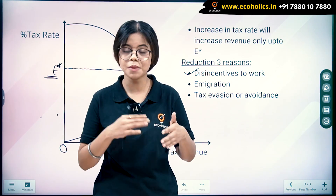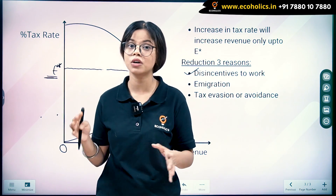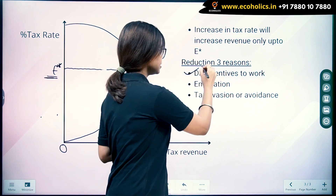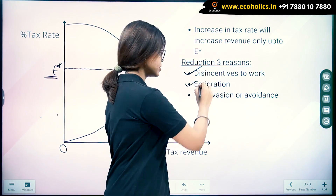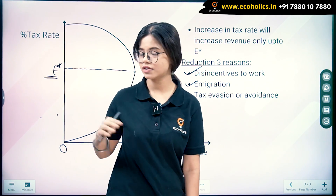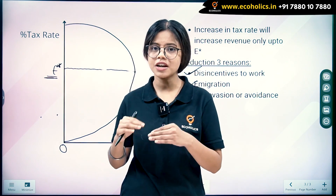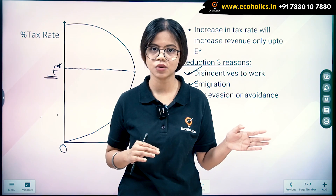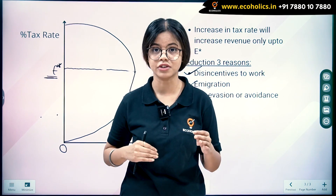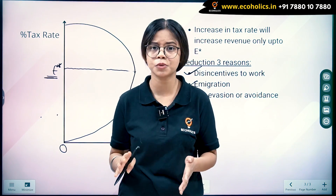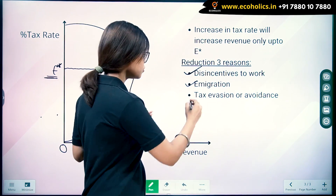People start substituting leisure — they don't want to work because the more they work, the more will be taxed away. So the first reason is it disincentivizes people to work. The second reason is immigration. If in our country the tax rate is high, high-skilled people will try to migrate to other countries where the tax rate is lower. Entrepreneurs and skilled workers will leave, which is why tax revenue also falls.